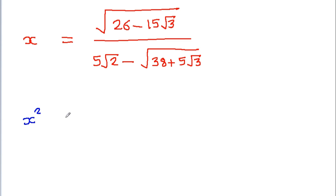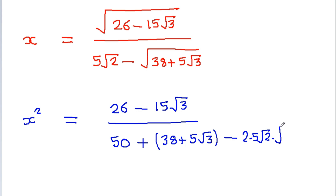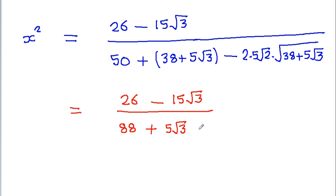So x² will be: (26 - 15√3) / (5√2)² — here 5√2 squared will be 50 — minus (38 + 5√3), minus 2 × 5√2 × √(38 + 5√3). Simplifying: (26 - 15√3)/50, and 38 + 5√3, minus 2 × 5 = 10, and √2 × √(38 + 5√3) = √(76 + 10√3).